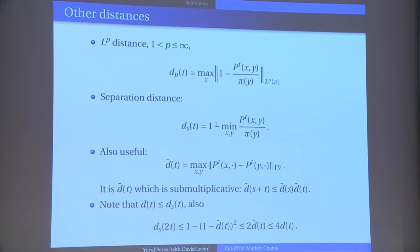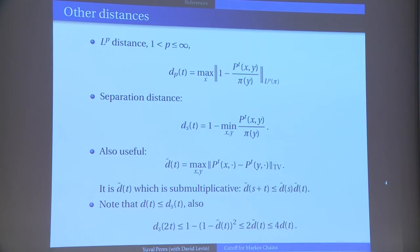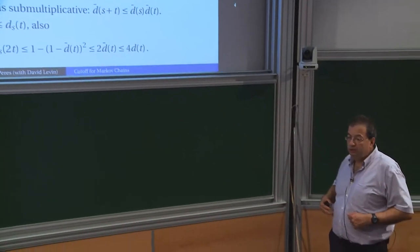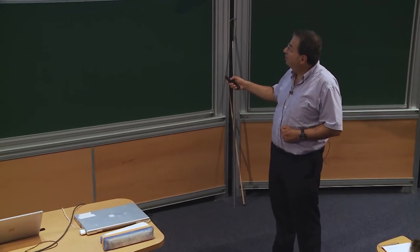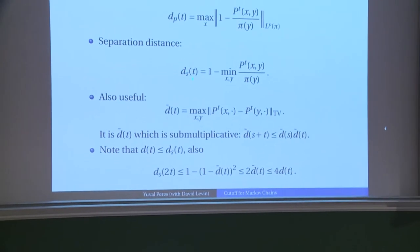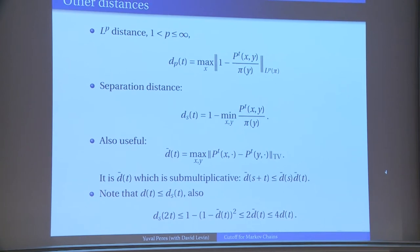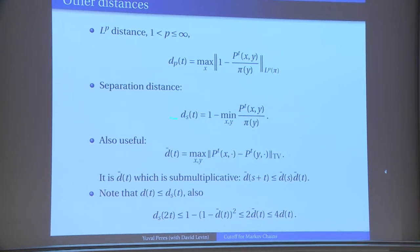Here is a somewhat more subtle definition called separation, introduced by Aldous and Diaconis. At first this looks just like L-infinity, but it's not — notice there is no absolute value here. The separation distance measures to what extent the distribution is blanketing the space. We want to control states with too low a probability, but we don't worry about states with too high a probability. It turns out this is very close for reversible chains to the total variation distance, while the L-infinity distance can be much larger and decay more slowly.